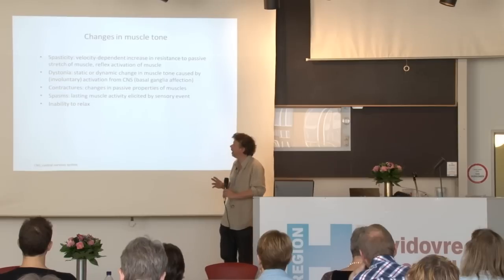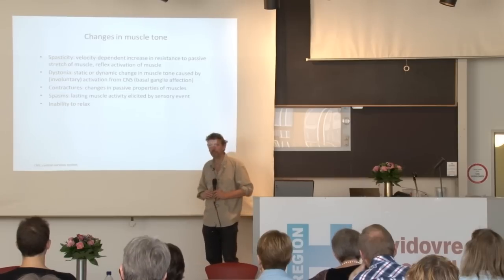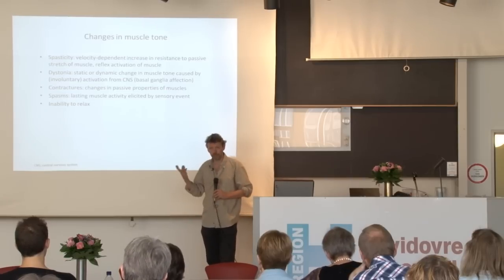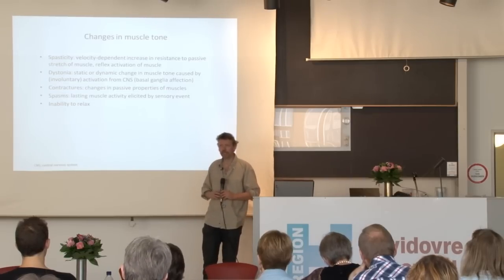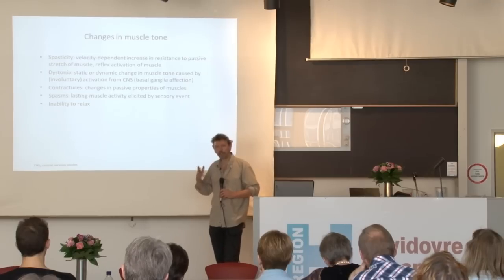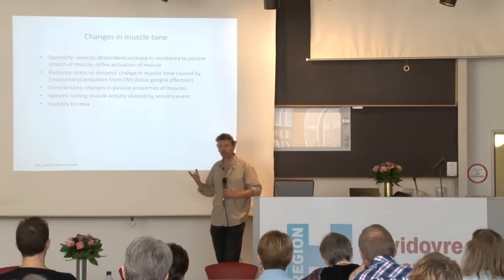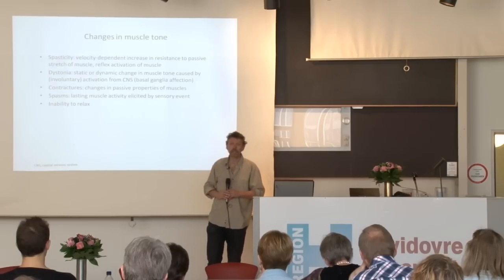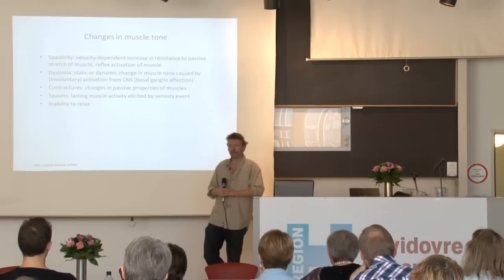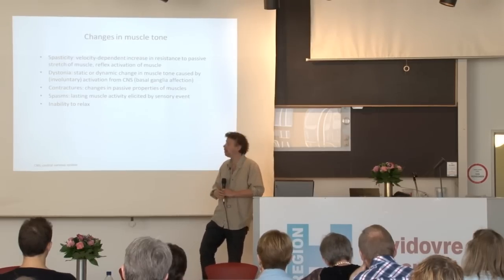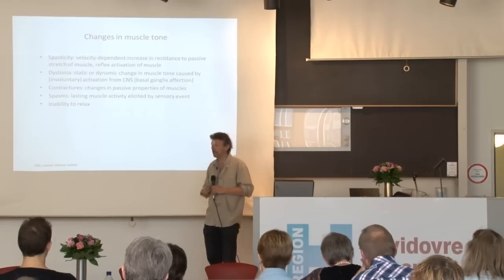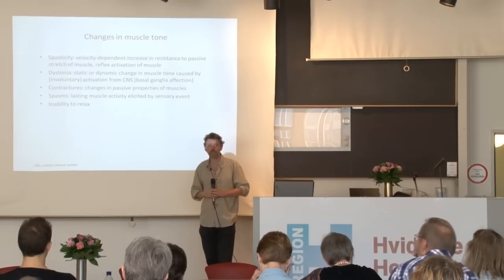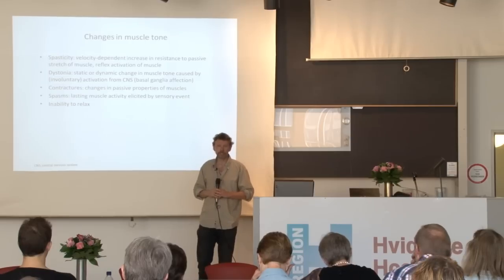Now, classically, spasticity and dystonia — and also related to that, rigidity — are relatively easy to distinguish, because it all lies in the velocity dependency, where the resistance that you feel, the catch that you feel when you do a passive manipulation of the limb, is manifested as this velocity-dependent increase in muscle resistance.